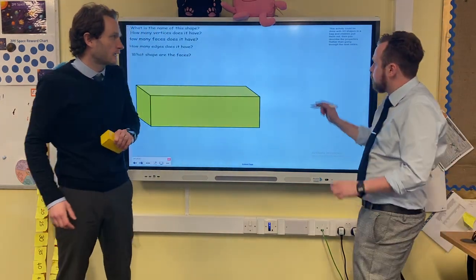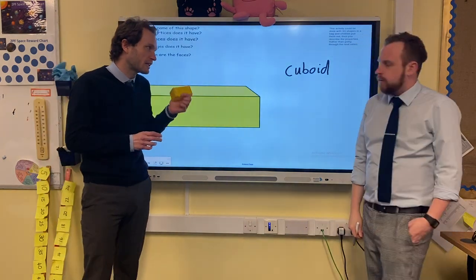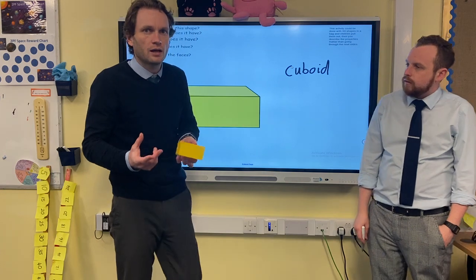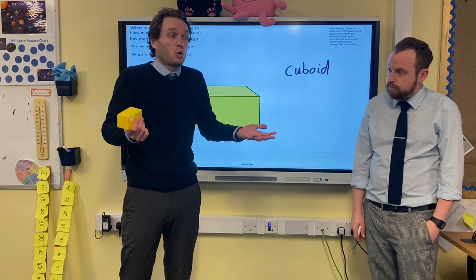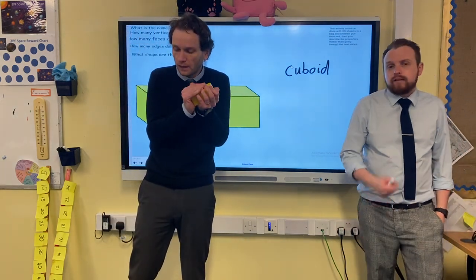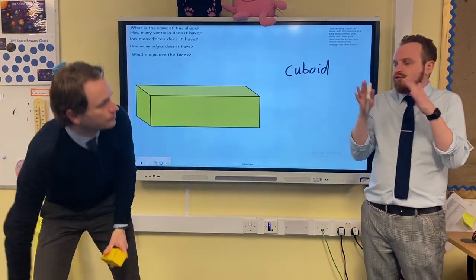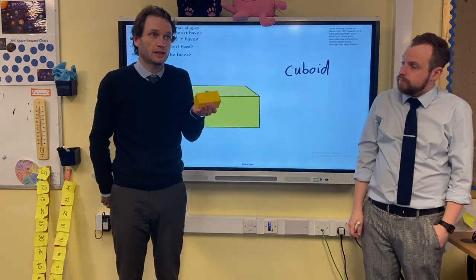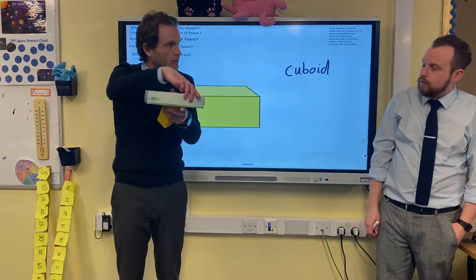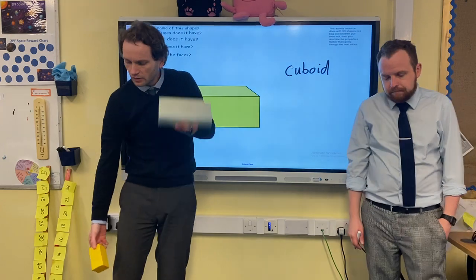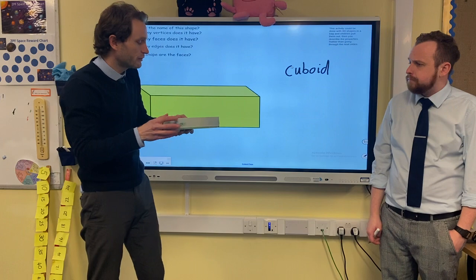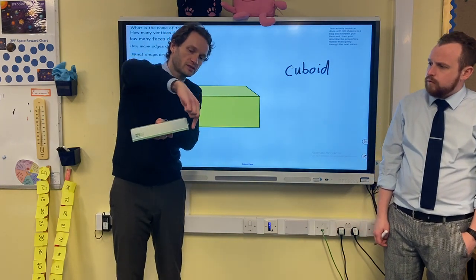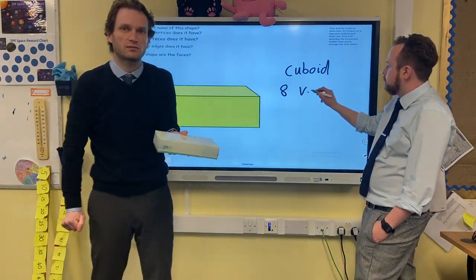Could you write 'cuboid' for us? Because that's what we're focusing on today. Now let's describe the properties of this cuboid. First, let's count the vertices — remember from yesterday, vertices just means corners, the sharp bits where edges meet. I'm going to use this box of tissues, which is actually a cuboid. We've got one, two, three, four on this side, and five, six, seven, eight on the other — eight vertices.